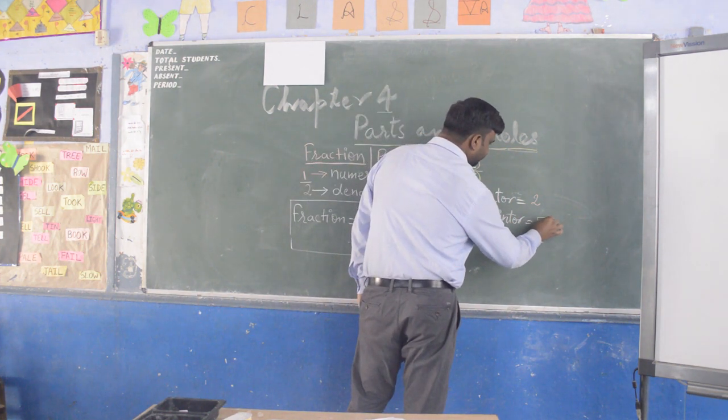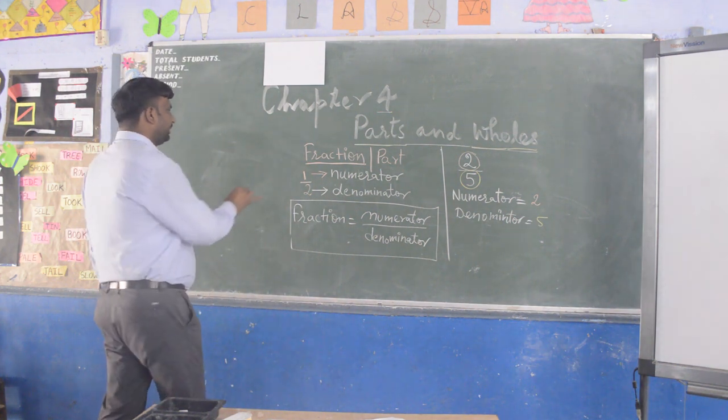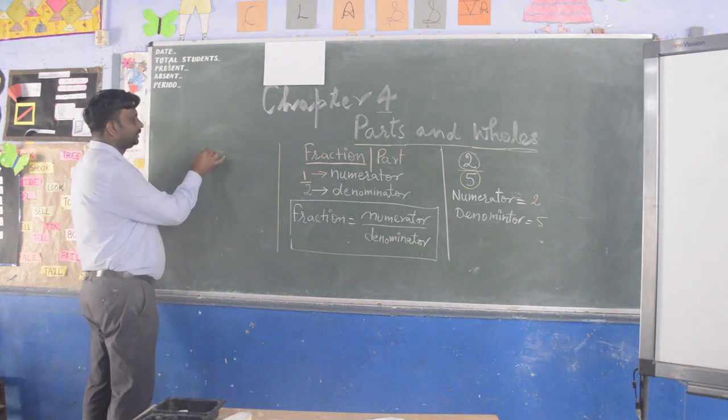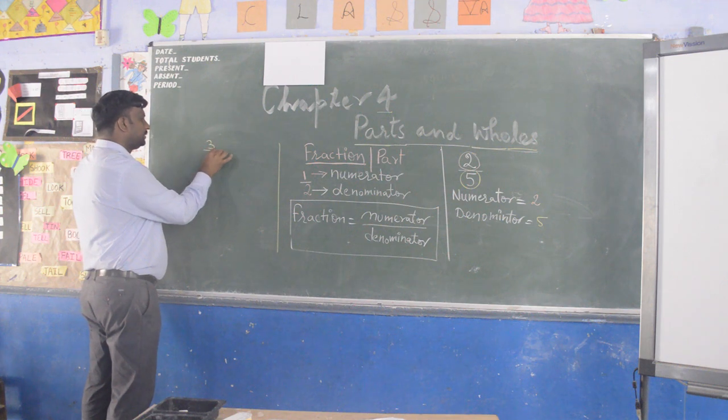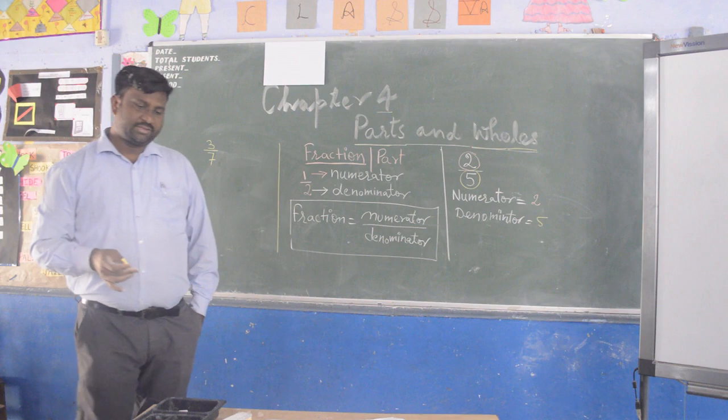Okay, similarly, take another example. 3 upon 7. What is numerator here?